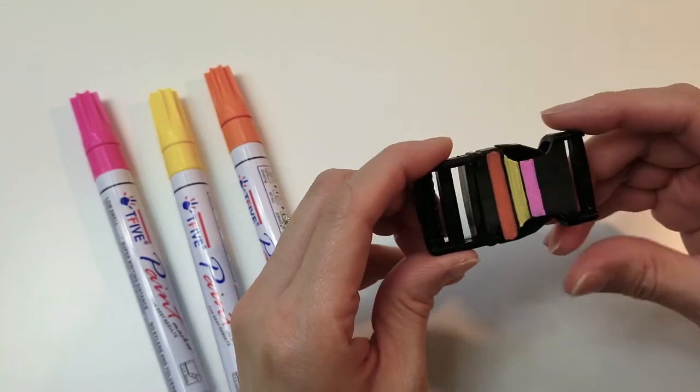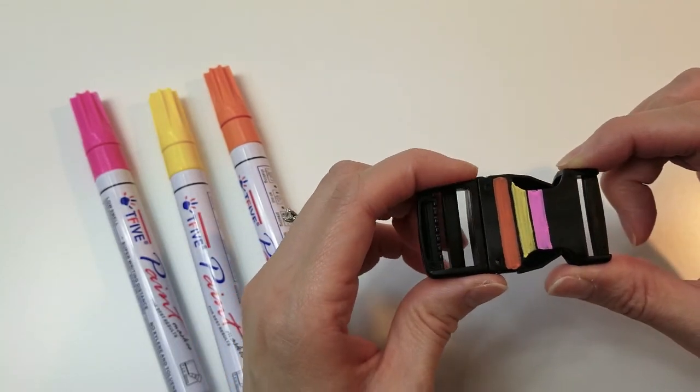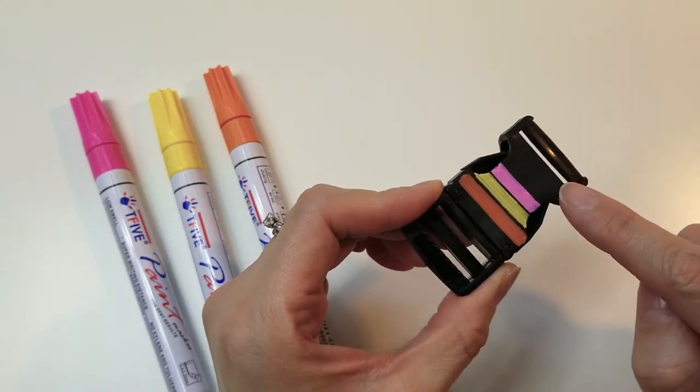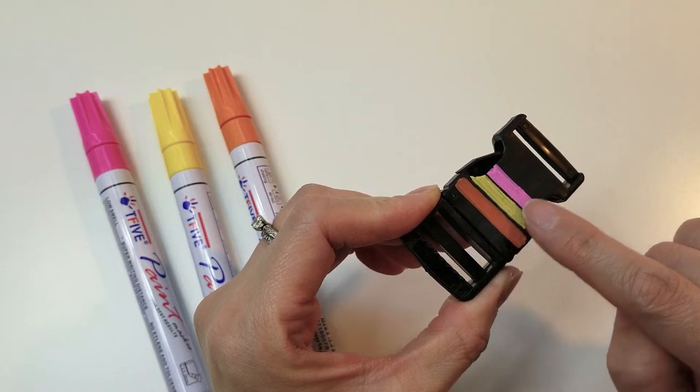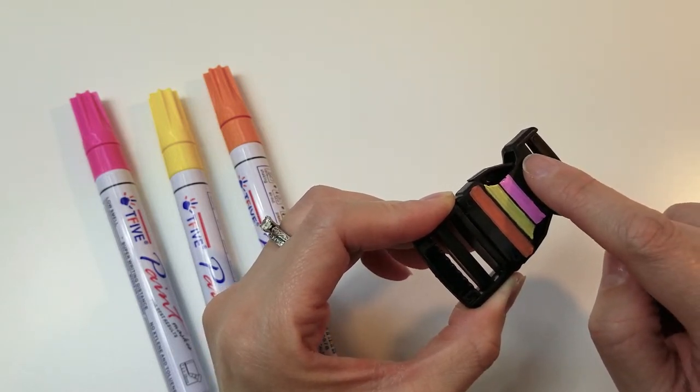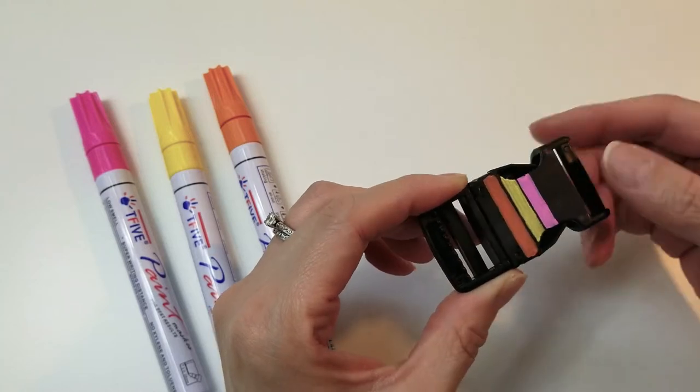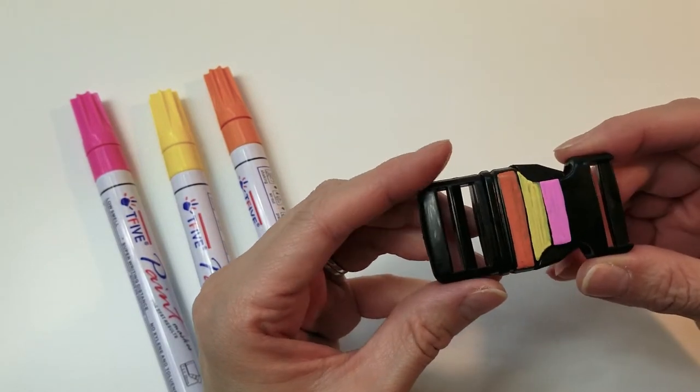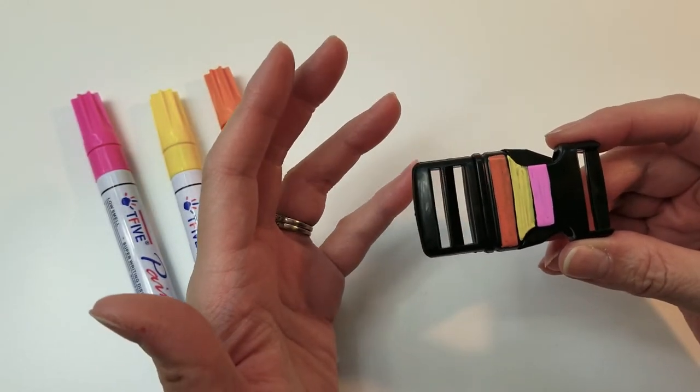I also went ahead and on the reverse side took some sandpaper and sanded it down. I used a really rough grade sand over here and a slightly finer grain of sandpaper up here. So first I'm just going to show you what it does on just a shiny surface like a buckle.